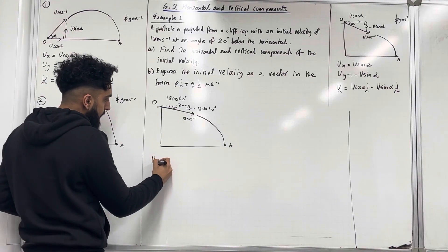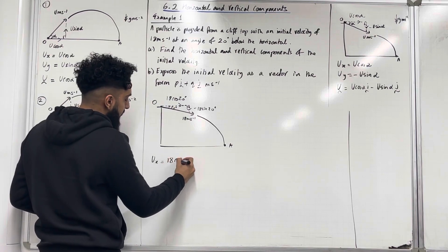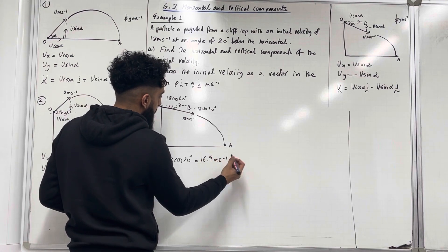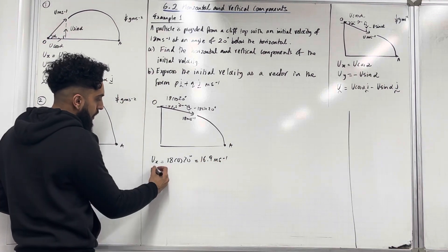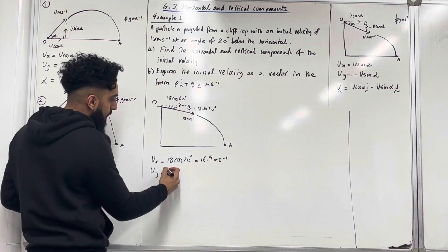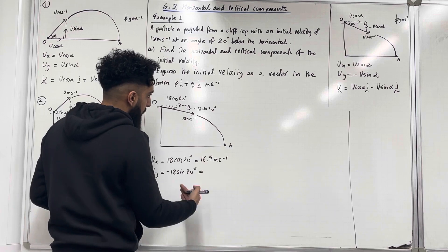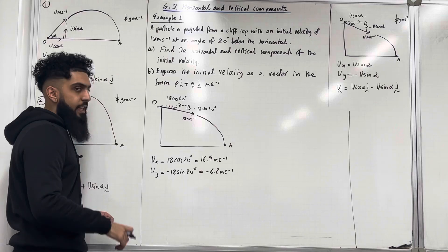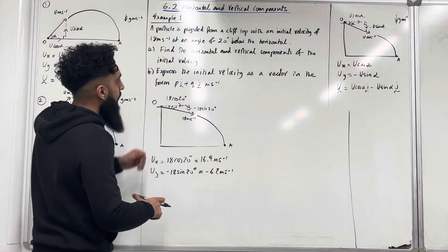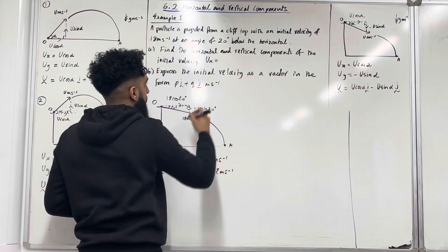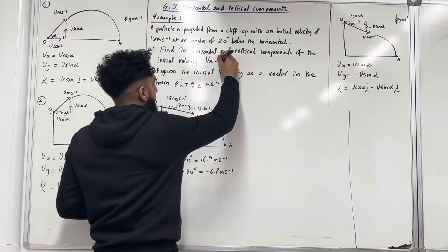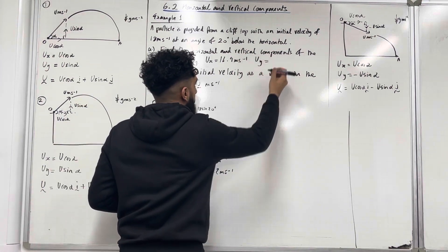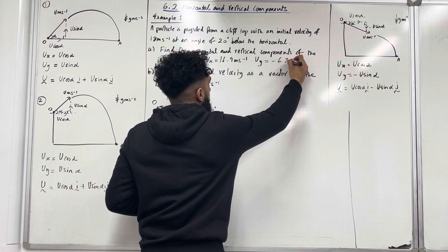So ux is equal to 18 cos 20 degrees. Putting this into our calculator, we get 16.9 meters per second to three significant figures. Uy, the vertical component, is minus 18 sin 20 degrees, and putting this into our calculator we get minus 6.2 meters per second to three significant figures. So for part A: ux, the horizontal component of the initial velocity, is 16.9 meters per second, and uy, the vertical component, is minus 6.2 meters per second.